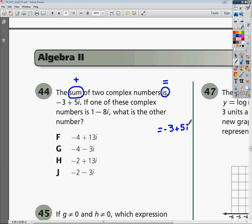If one of these complex numbers is 1 minus 8i, as in, if one of these numbers is 1 minus 8i, what do we need to add to that in order for it to become negative 3 plus 5i? So, what is the other number?